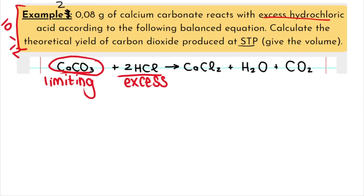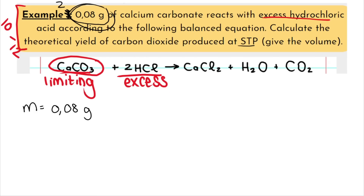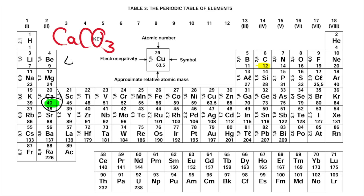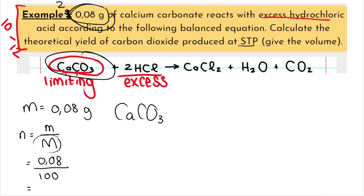Step 2: calculate the moles of the limiting reagent. They tell me 0.08 grams of calcium carbonate — that is mass (lowercase m). I need to convert this to moles using the formula n = m/M. My mass is 0.08 grams. The molar mass (big M) of CaCO₃ is found from the periodic table: calcium is 40, carbon is 12, oxygen is 16 times 3, giving a molar mass of 100 g/mol. The number of moles of calcium carbonate is 8 × 10⁻⁴ mol. Step two is done.